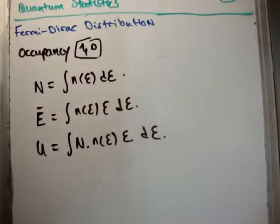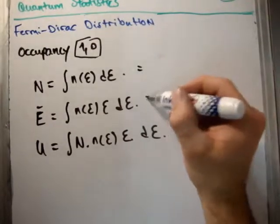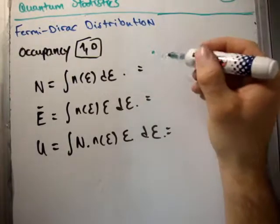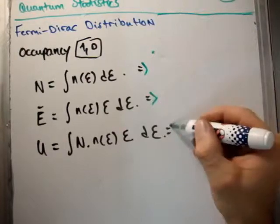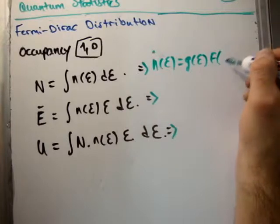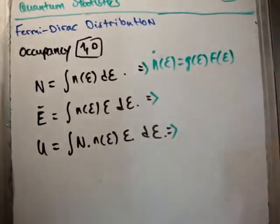What I haven't added in is that n(ε) is equal to the density of states times the occupancy function. If you don't understand that, look at my video called Density of States, Occupancy, and Number, where I explain that.